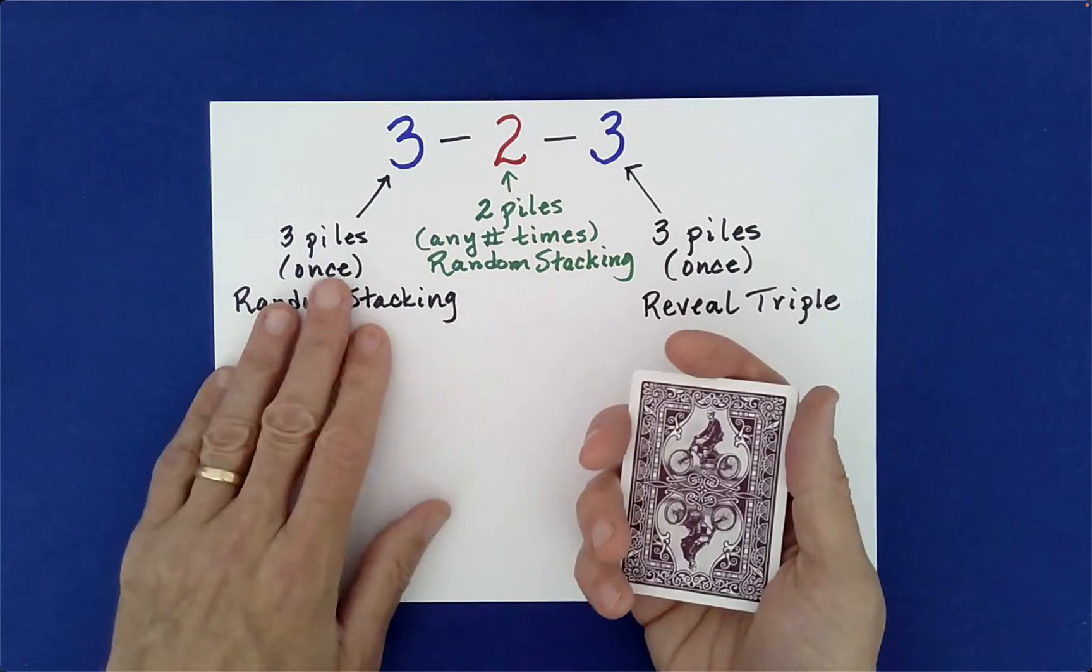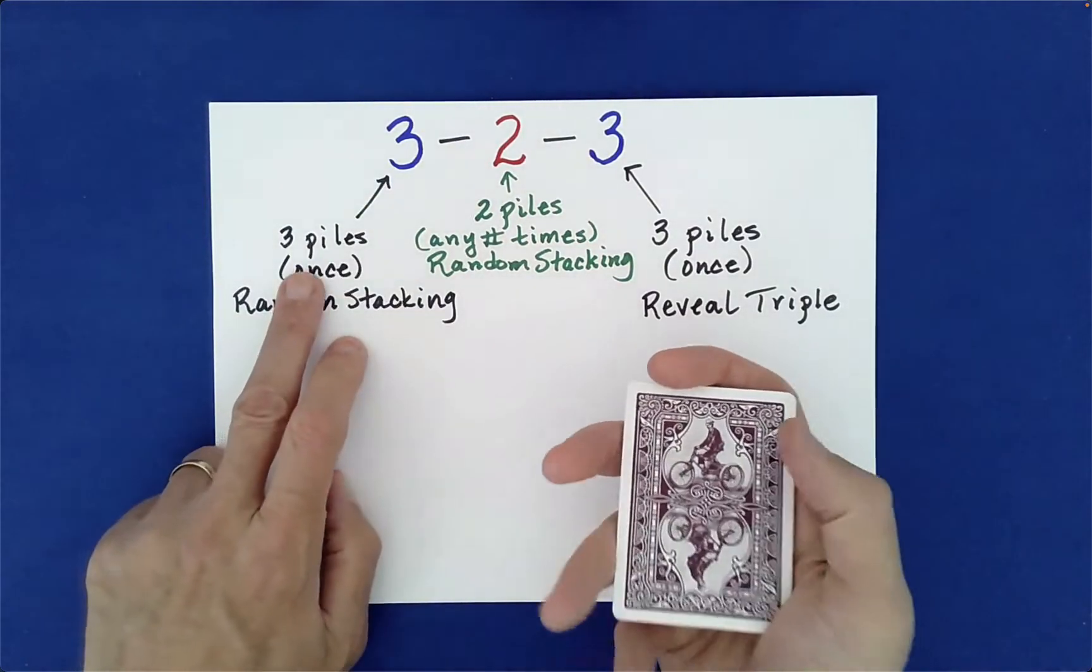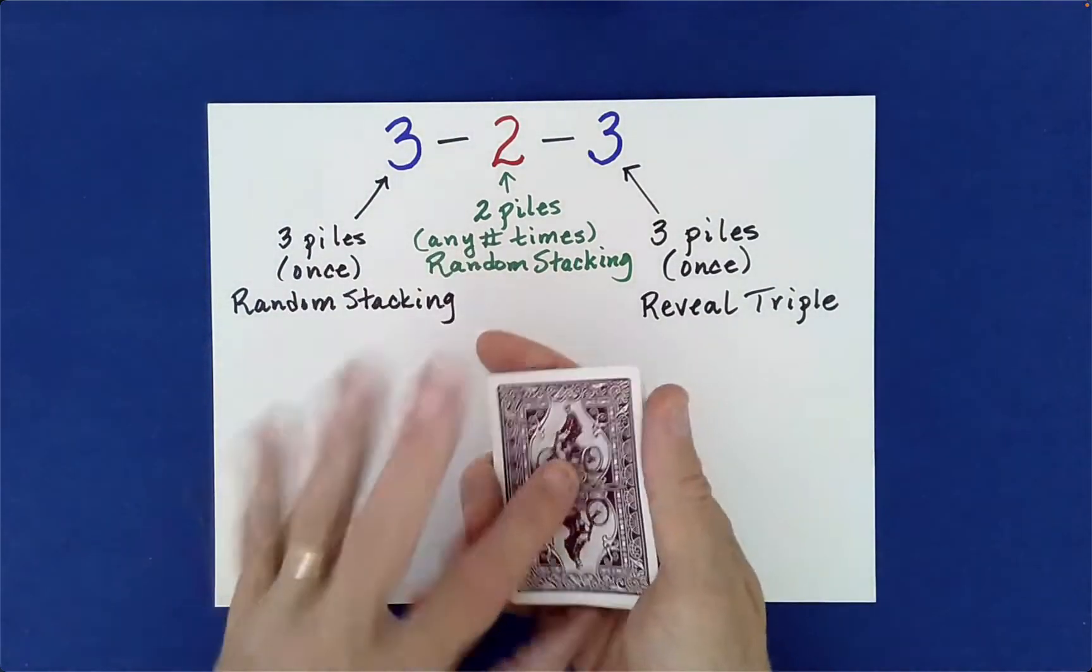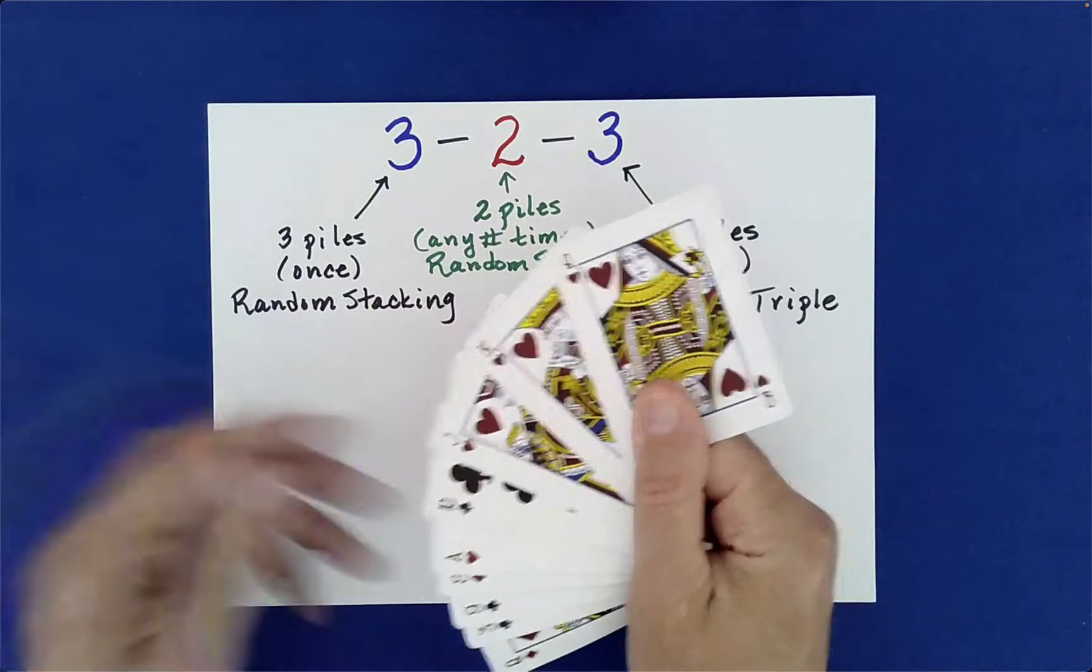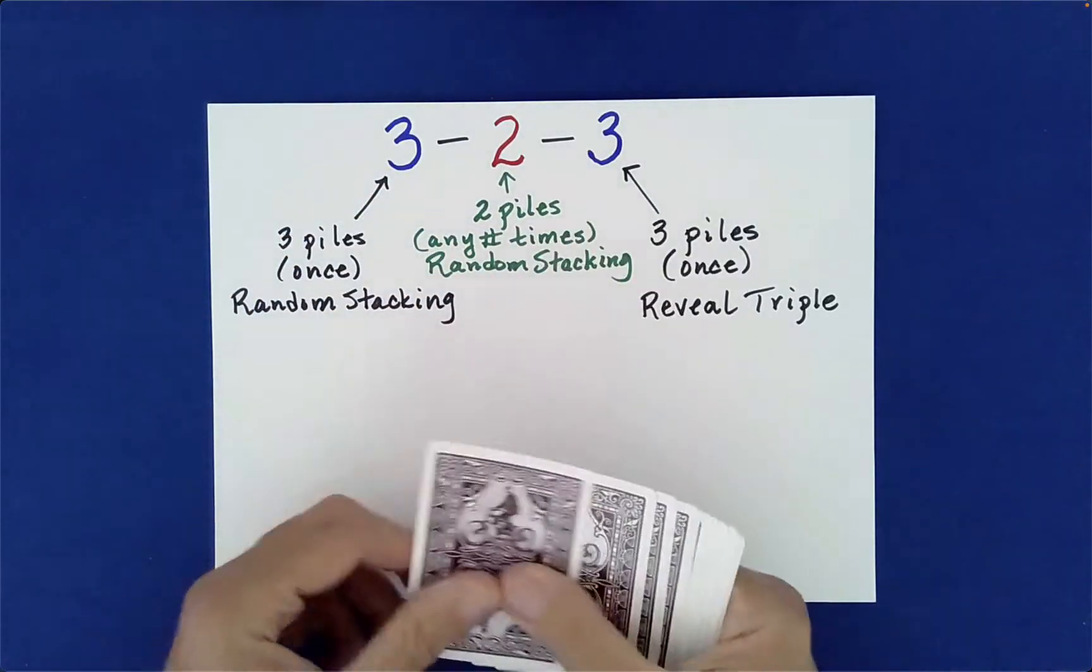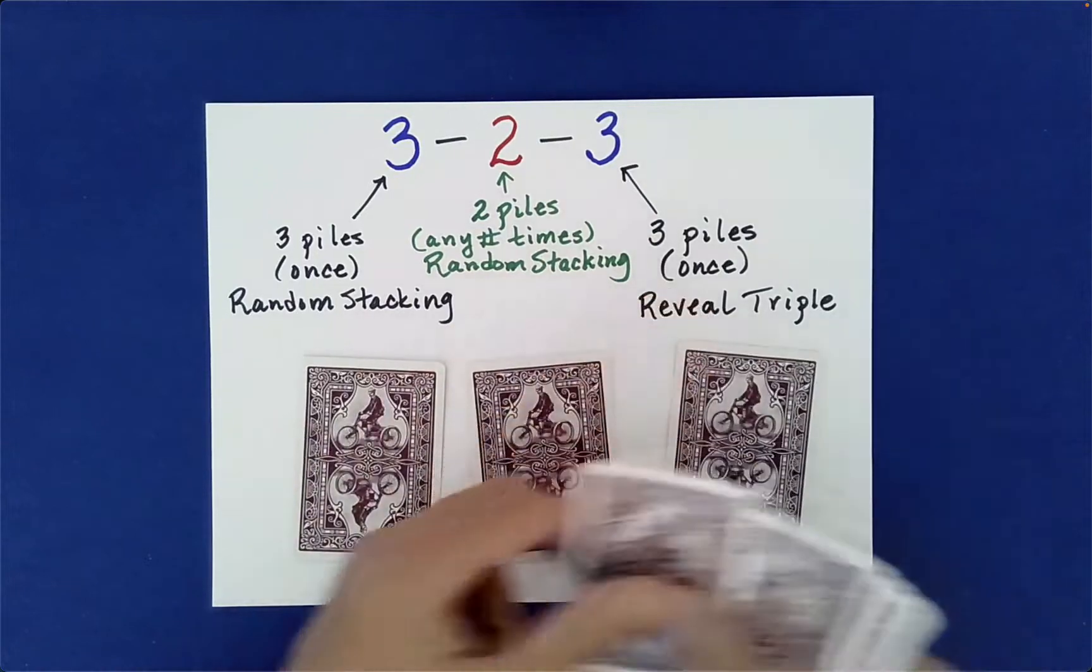The first three is referring to dealing out the cards. So we have the nine cards, special cards, the three special cards at the bottom. Now you deal into three piles, left to right or right to left.